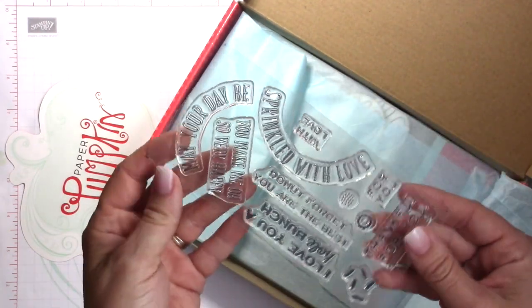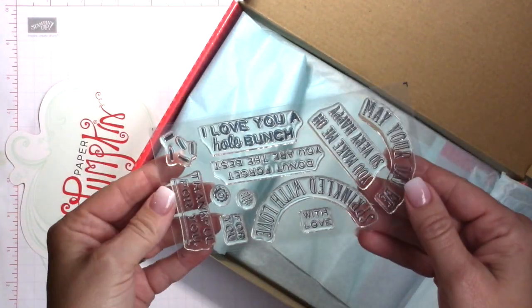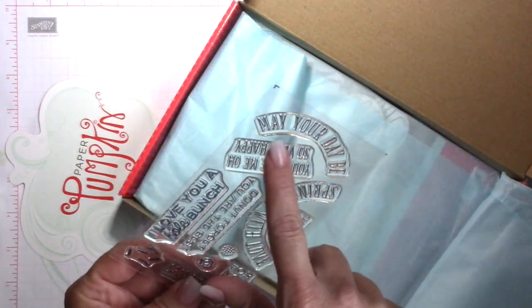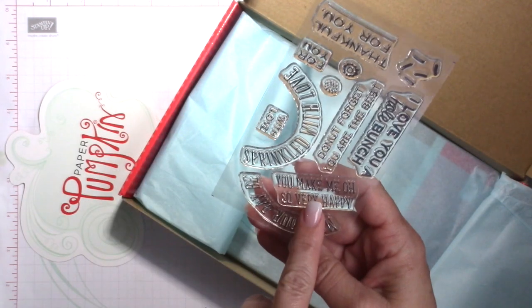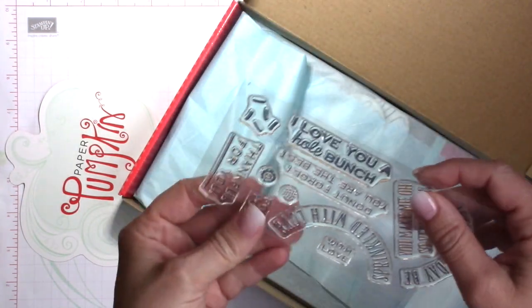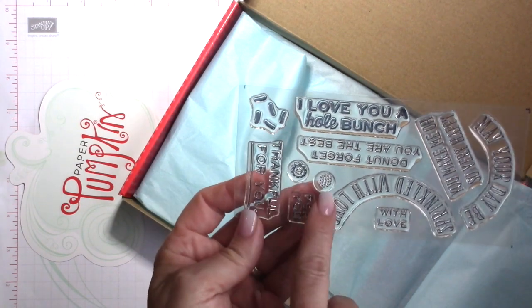I don't know if y'all had noticed that, but this is the photopolymer stamp set that we received this month. Oh, it's just absolutely adorable. I love these stamp sets that we get. They are exclusive and the only way that you are able to get the stamp sets is to become a Paper Pumpkin customer.